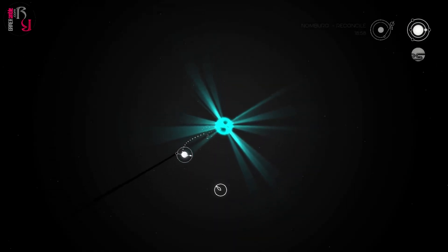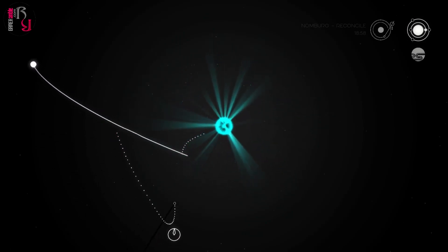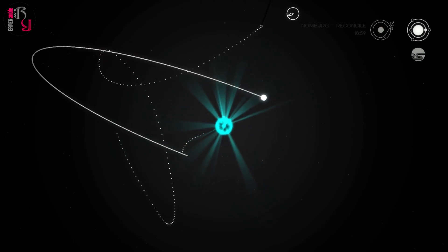Players can influence the direction in which the probe moves, but working with the orbital path instead of against it makes it easier to find all the hidden planets. As Voyager moves across the screen it leaves a trail of dots in its wake, which means the game is also a great way to create some atmospheric and emergent celestial art.